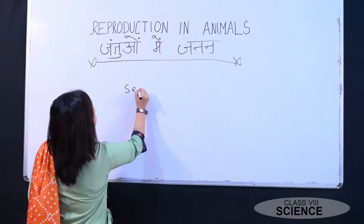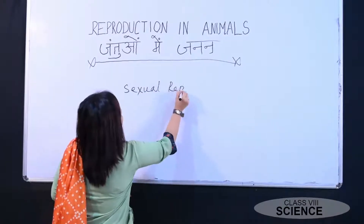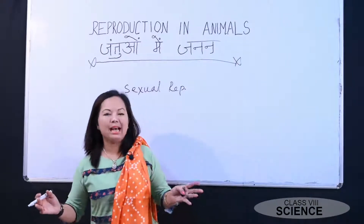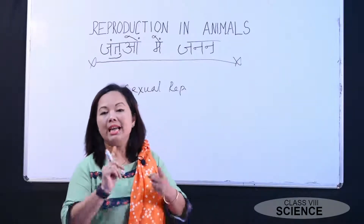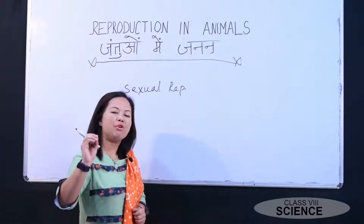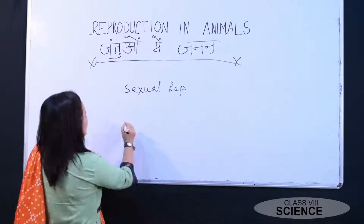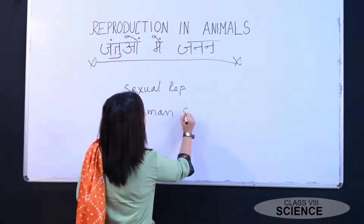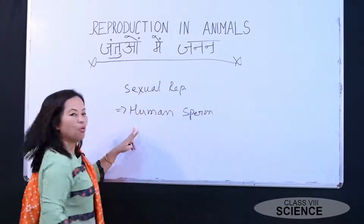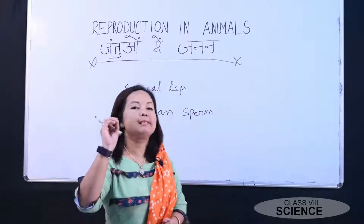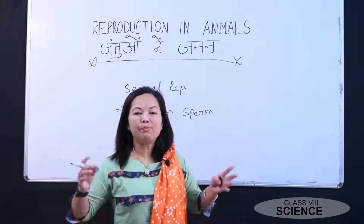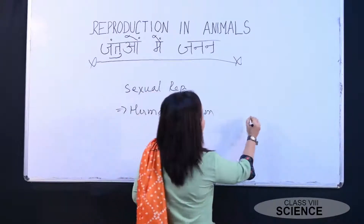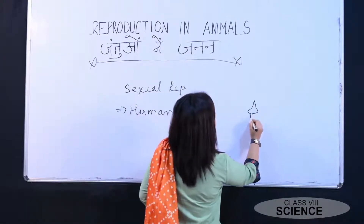We have seen the two types of reproduction — sexual and asexual. Now first we'll talk about sexual reproduction in human beings. In sexual reproduction there is the involvement of gametes. The human sperm is the male gamete. It is a single cell, produced from the pair of testes, and its body is divided into three parts.